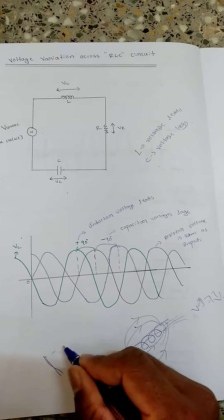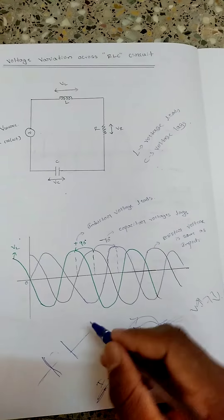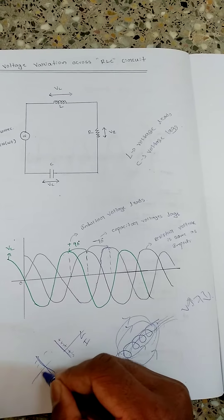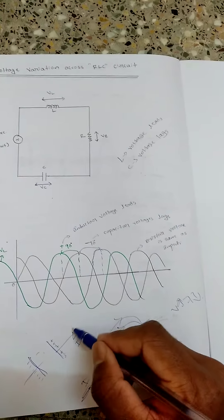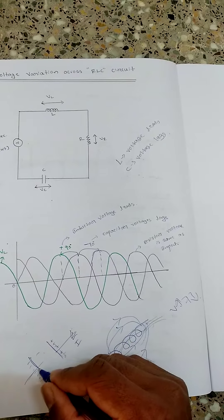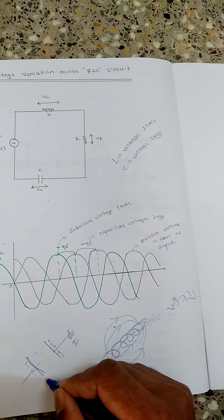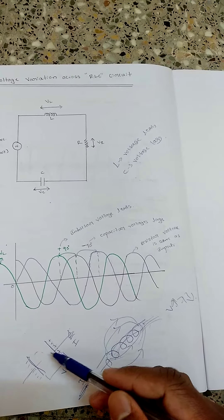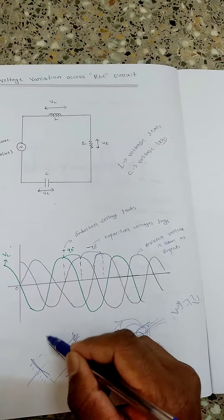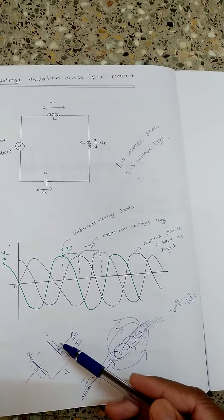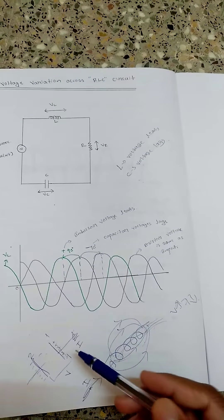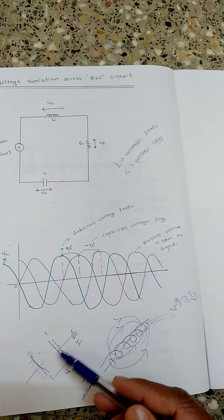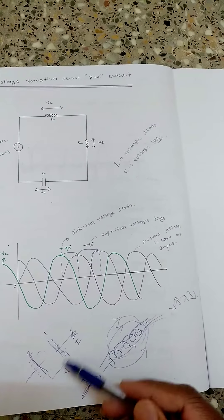Now coming to the capacitor — I will draw a parallel plate capacitor with two plates. When current comes in, charges accumulate: positive on one side and negative on the other. Voltage is formed when charges transfer from one plate to the other. The charges must first accumulate sufficiently on the first plate before they can move to the second plate, so some time is taken. The capacitor opposes the voltage increase across the two plates.